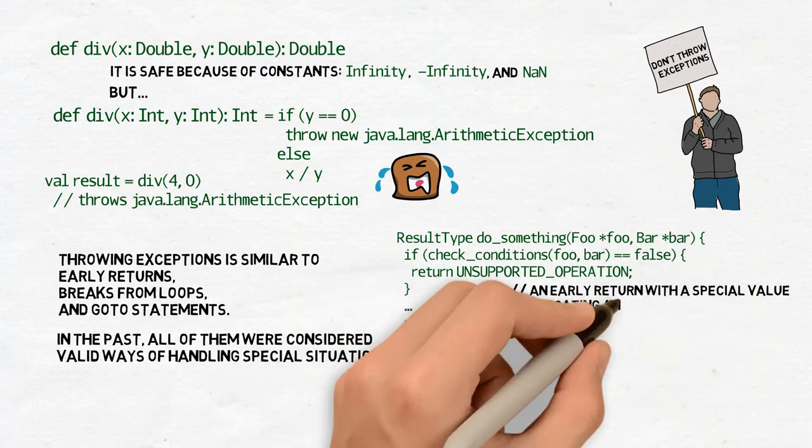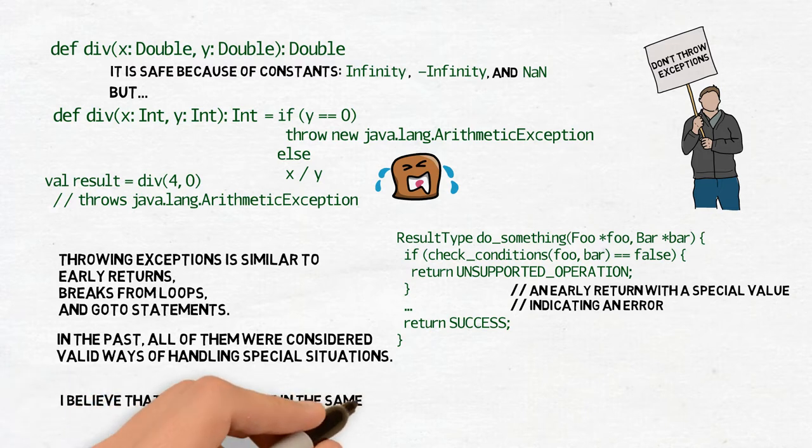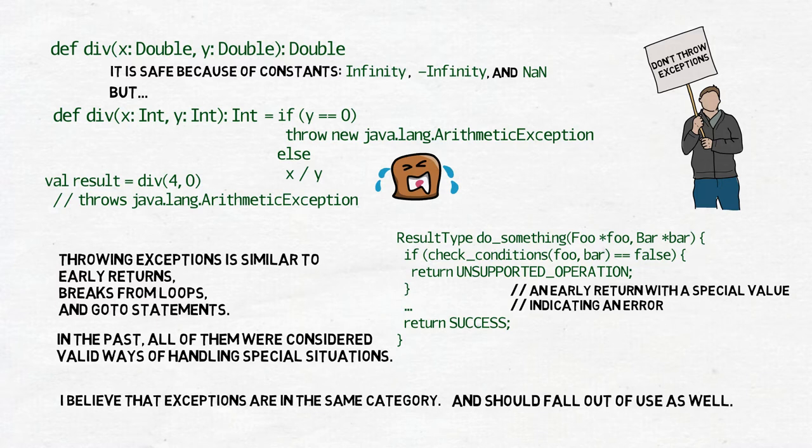In time, a lot of criticism arose about how these constructs led to unreadable code, difficult refactoring and hard to predict outcomes, and gradually they fell out of use. I very much believe that throwing exceptions is in the same category and should fall out of use as well. There is always a better way to handle a problem than throwing an exception or returning null value.